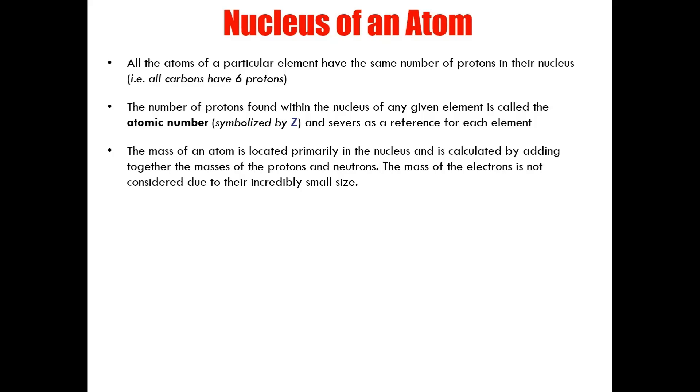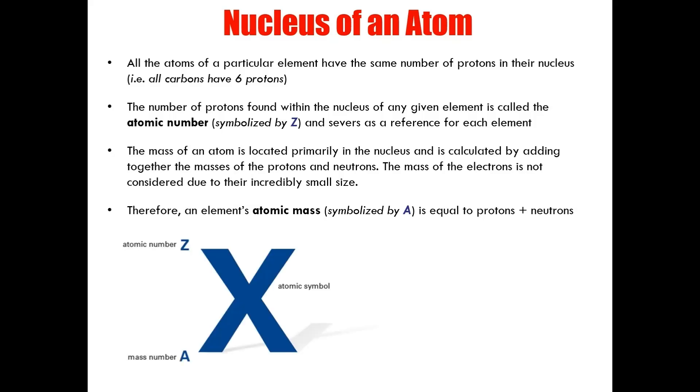The mass of an atom is located primarily in the nucleus, and is calculated by adding together the masses of the protons and neutrons of a particular atom. The mass of the electrons is not considered due to their incredibly small size, as I showed you in the last slide. Therefore, an element's atomic mass, symbolized by the letter A, is equal to protons plus neutrons. Every element on the periodic table has a symbol that's sandwiched between its atomic number and its atomic mass, otherwise called mass number. An example is shown here with iron. Now, iron's atomic number is 26 and its atomic mass is 55.85. The unit for atomic mass is U, which is in fact called the atomic mass unit.